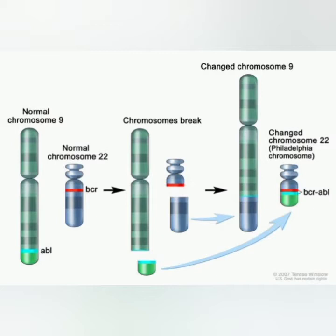The ABL (Abelson) gene contains a domain that adds phosphate groups to tyrosine residues. The hybrid ABL-BCR gene product is therefore a tyrosine kinase. Let's look at the characteristic features of this ABL-BCR hybrid.